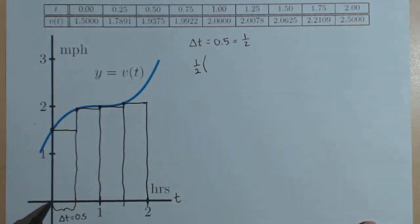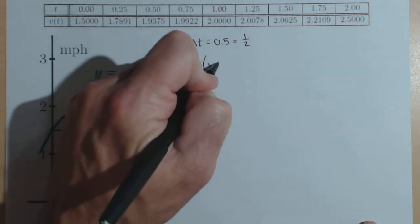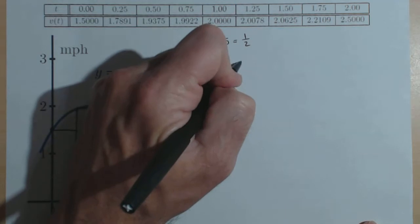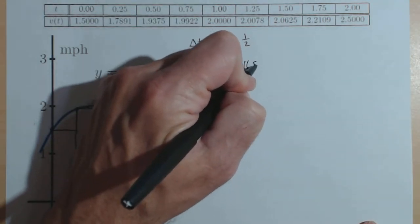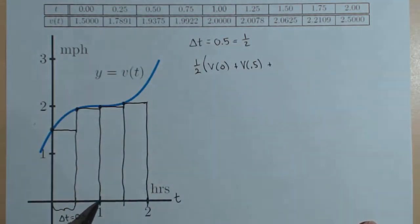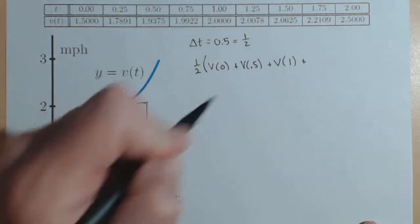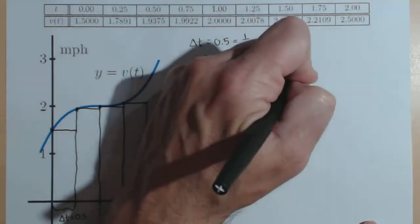What I need is v of 0 plus, here's v of 0.5,